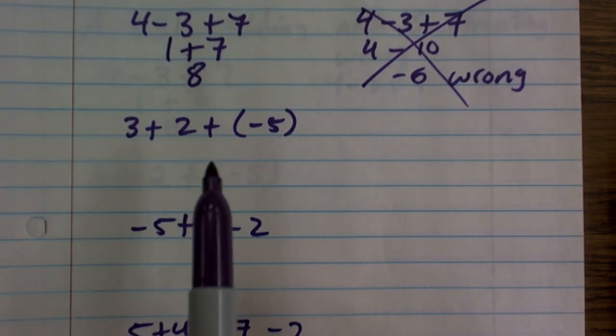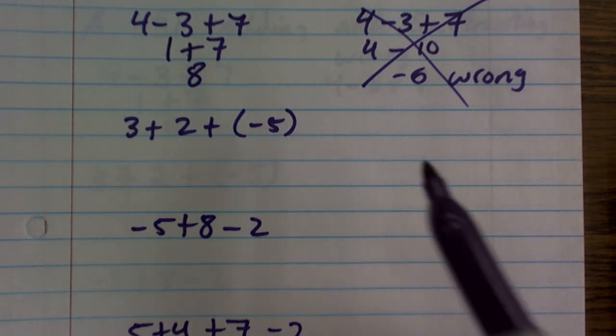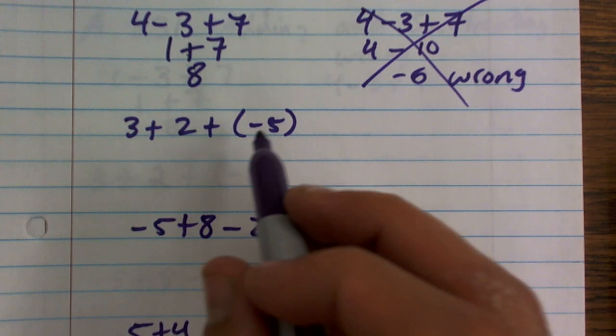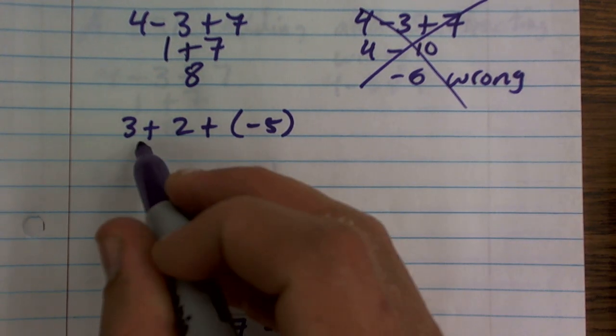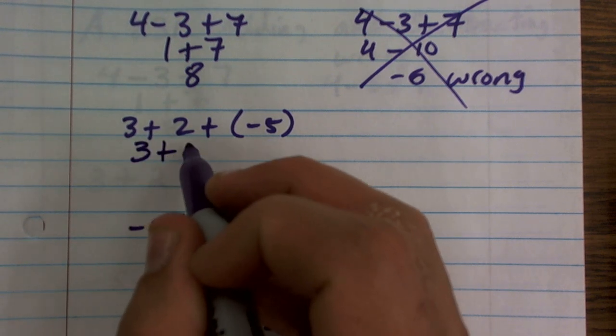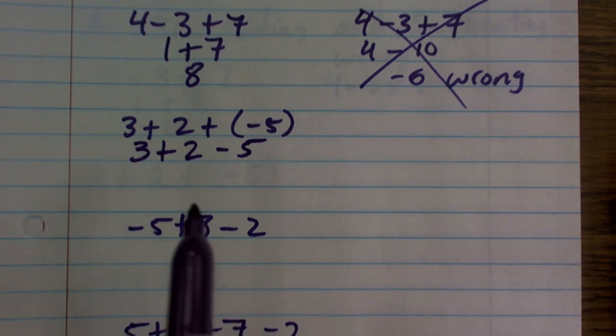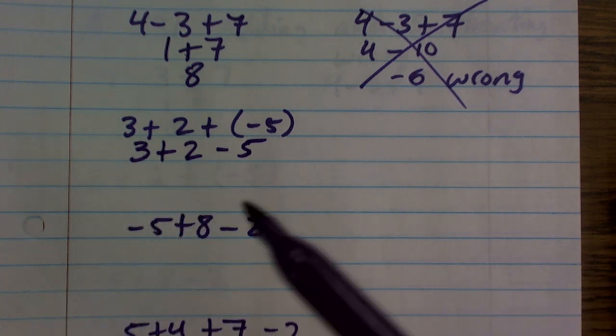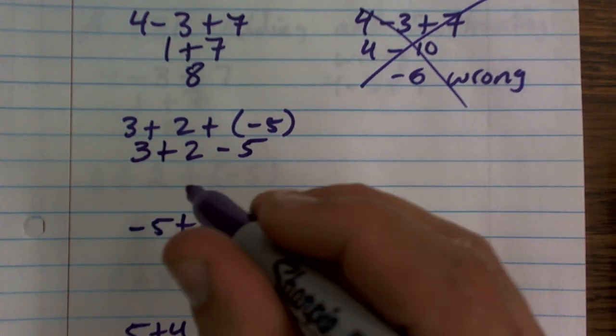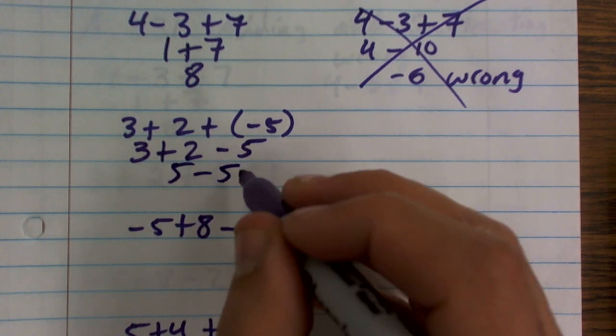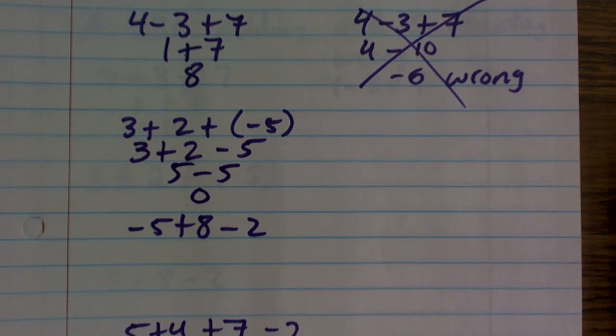Now, here I have 3 plus 2 plus a negative number. If you remember our negative number section, a negative number can be rewritten as a subtraction problem: 3 plus 2 minus 5. Again, I'll go from left to right. 3 plus 2 is 5. 5 minus 5 becomes 0.